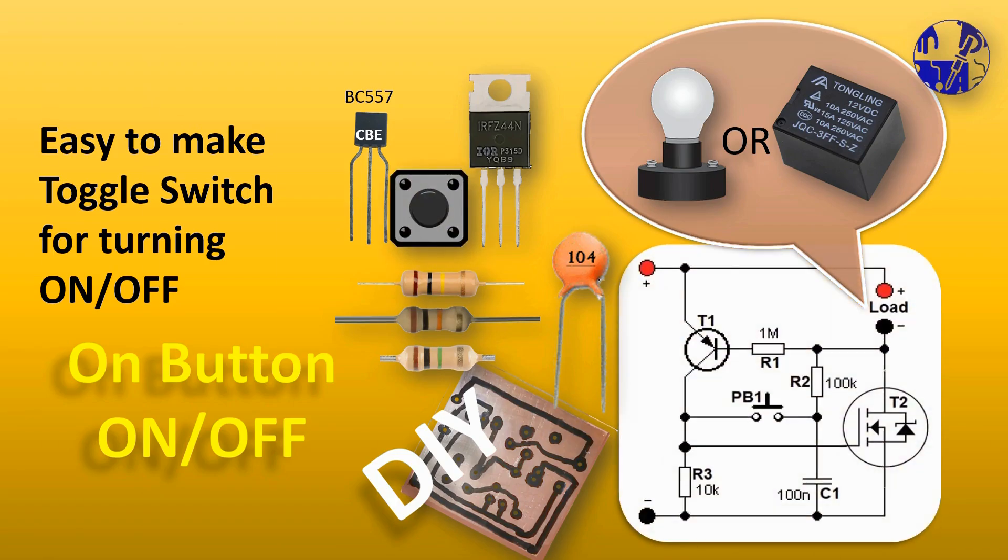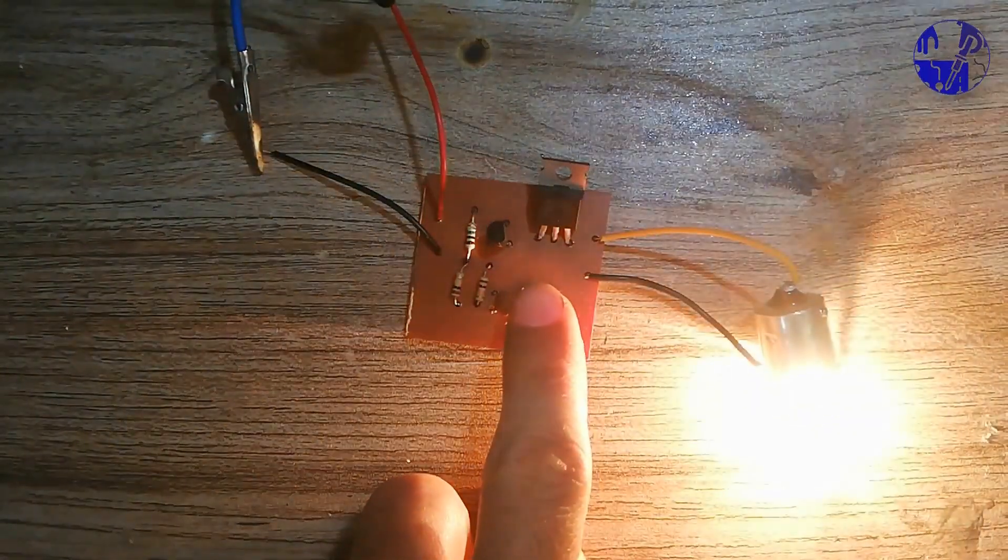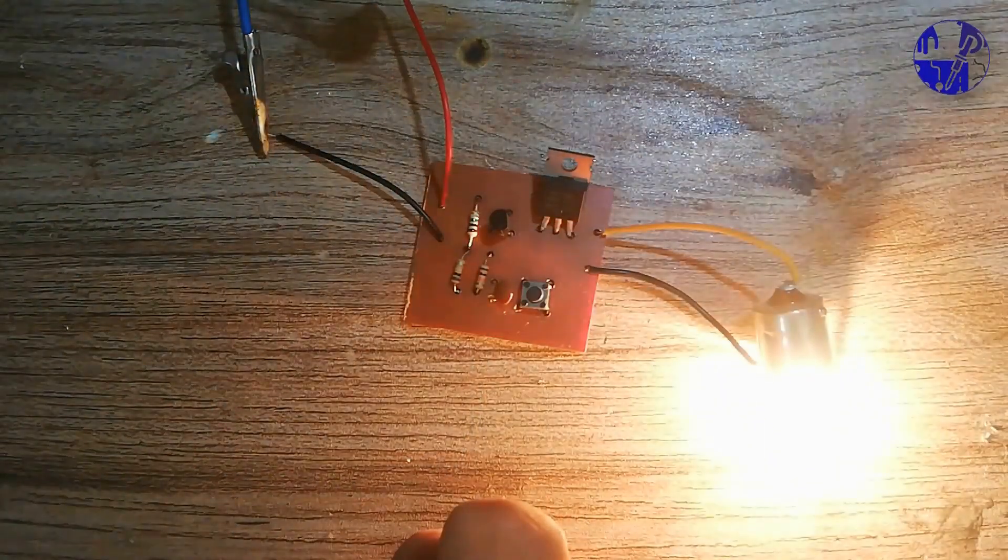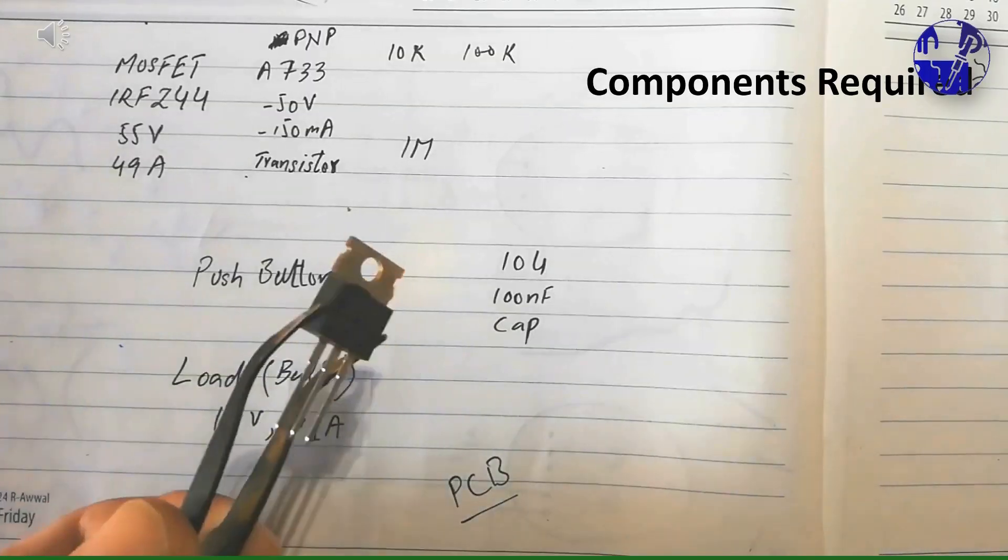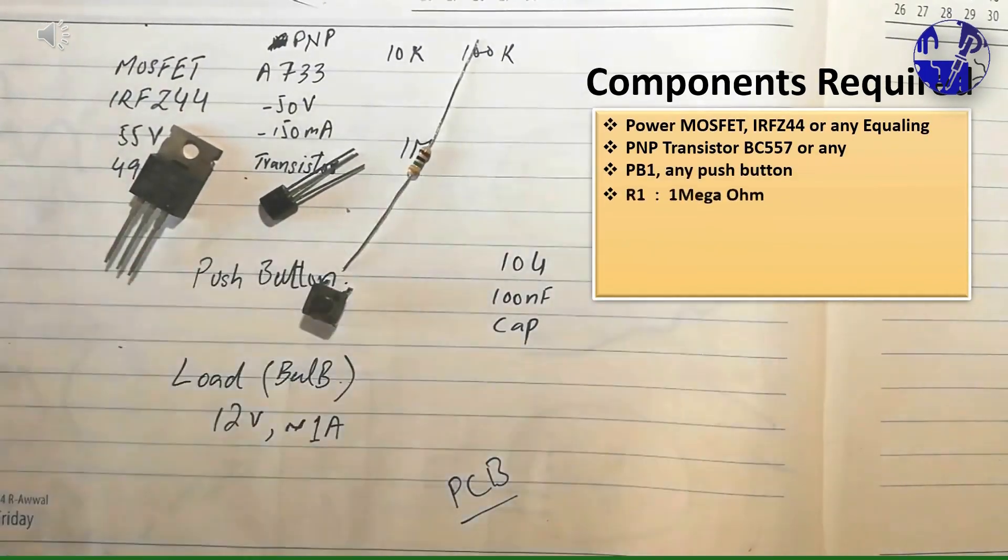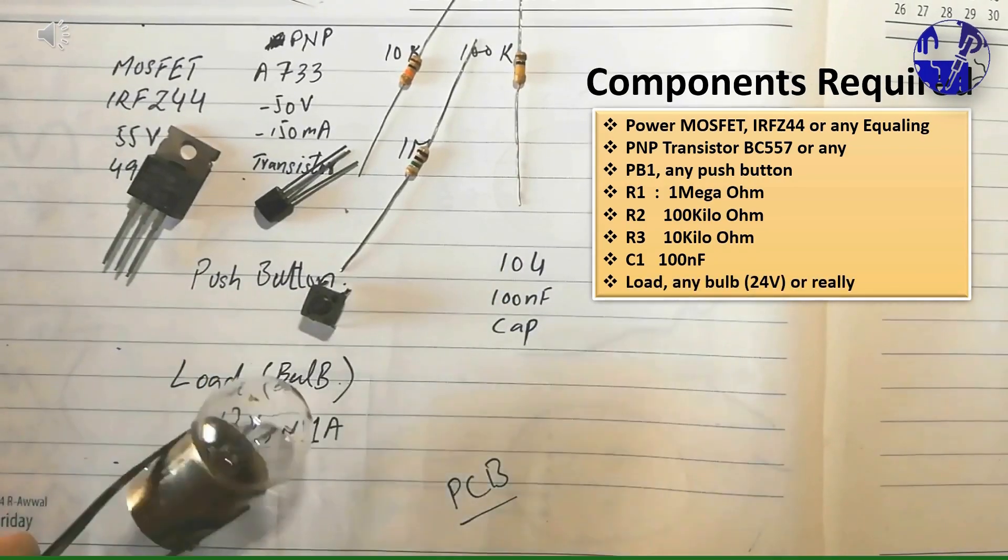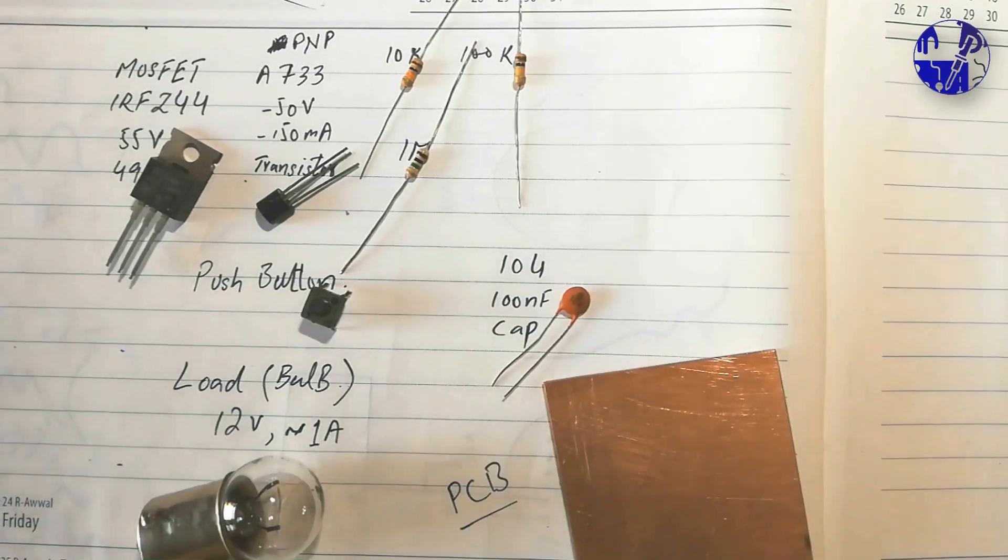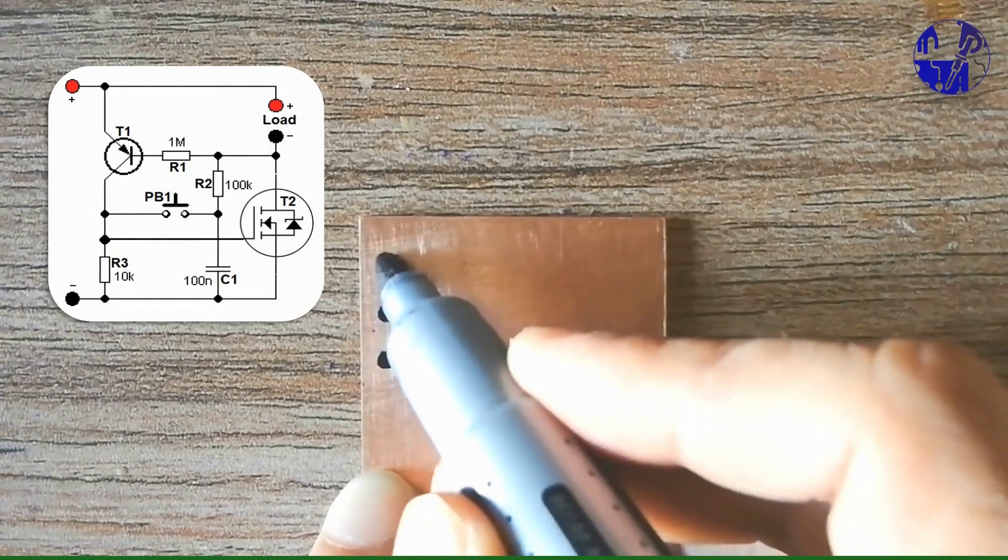This circuit simplifies turning appliances on and off using just one button. When you press the button, the circuit turns on, and pressing it again turns it off. In the off state, the circuit draws no current since both transistors are closed. This makes it ideal for battery-powered applications, providing efficiency and simplicity.